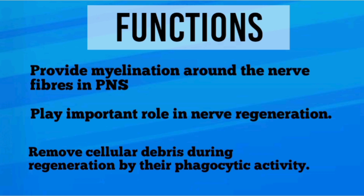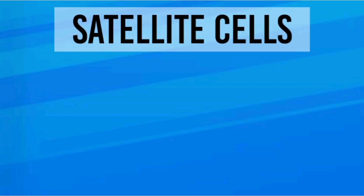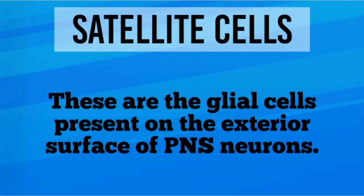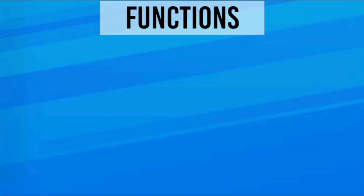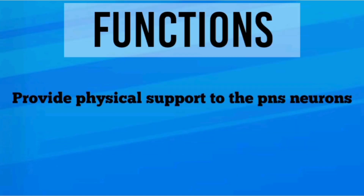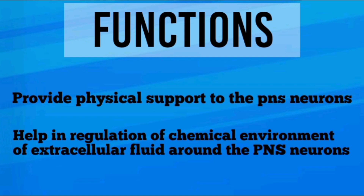Satellite cells are the glial cells present on the exterior surface of the PNS neurons. They provide physical support to PNS neurons and help in the regulation of the chemical environment of extracellular fluid around the PNS neurons.